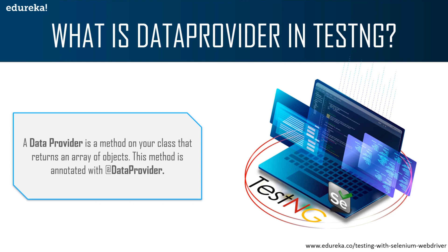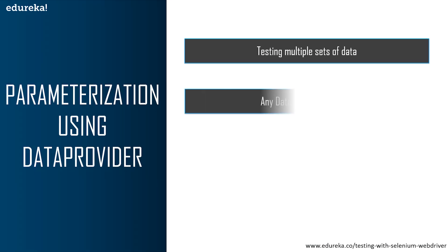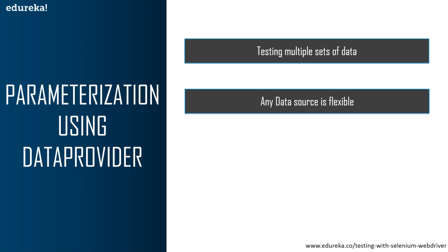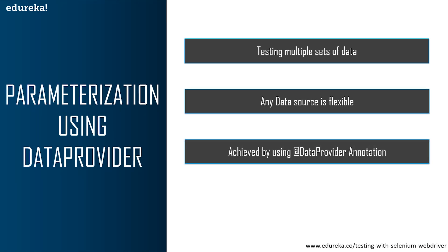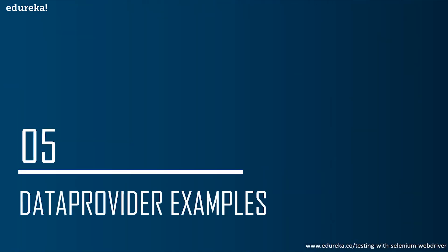Now that you know what data provider is, let's understand how it actually works through parameterization. Data provider eases the task of testing multiple sets of data to fill thousands of web forms. You need a methodology that gives you a very large data set in a single execution flow, and this data-driven concept is achieved by the @DataProvider annotation in TestNG. It has only one attribute — name. If you do not specify the name attribute, the data provider's name will be the same as the method name. It also returns a two-dimensional Java object to the test method.